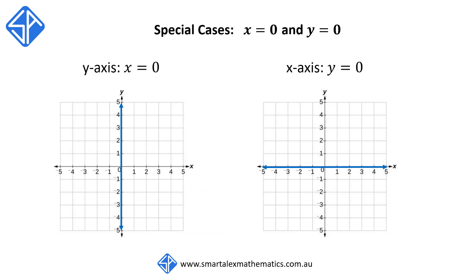There are two special cases for vertical and horizontal lines. When x is equal to 0, we have the y-axis, because every single point along the y-axis — it doesn't matter which point you take — they all have the x-coordinate of 0.